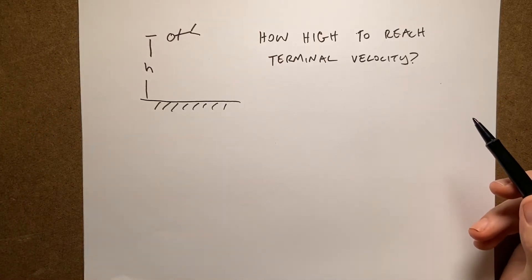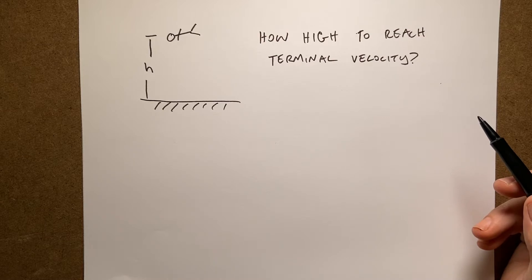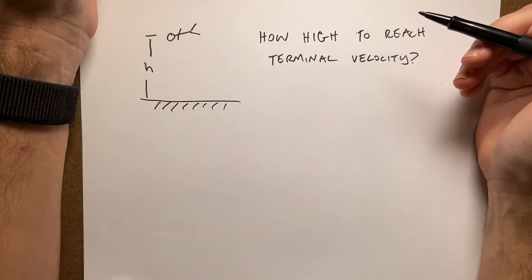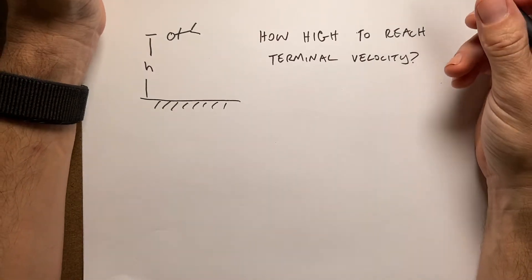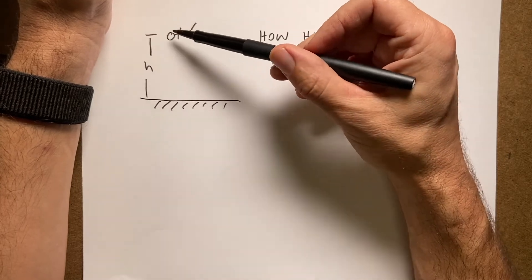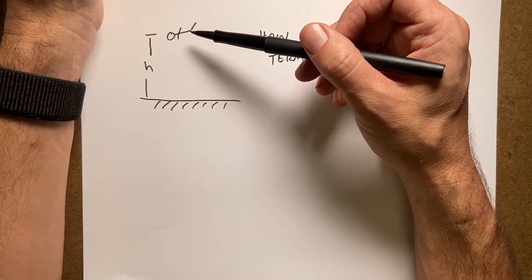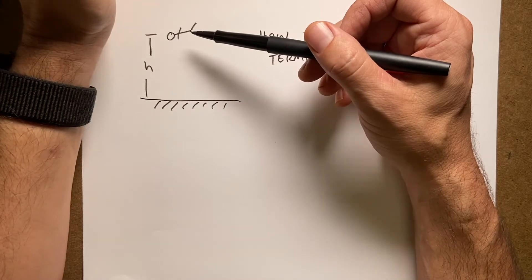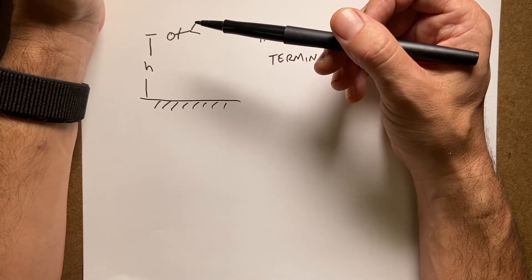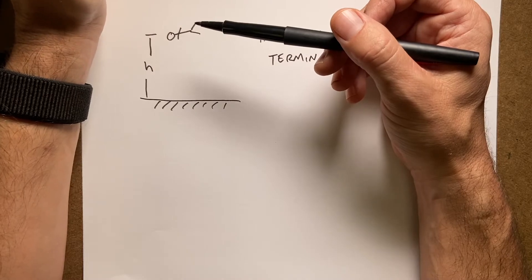Okay, so this is a question that actually surprisingly has come up multiple times for me, especially as I work on TV shows and stuff like that. And the question is, suppose I have a person or a cow or a box, it could be anything, and I want to drop it, but I want to model it falling from super high height.